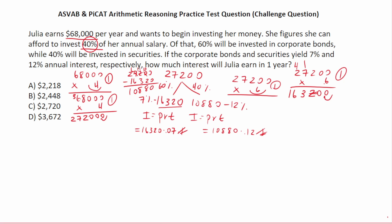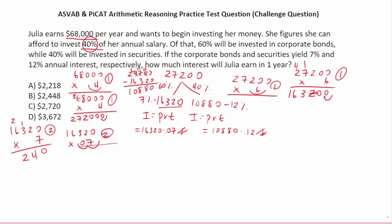We're going to do this multiplication, then this multiplication, and add the two results together. We have 16,320 times 0.07. Move our decimal two places to the right to make this 16,320 times 7, with two decimals to move back in when done. 0 times 7 is 0. 7 times 2 is 14, carry a 1. 7 times 3 is 21, plus 1 is 22, carry a 2. 7 times 6 is 42, plus 2 is 44, carry a 4. 1 times 7 is 7, plus 4 is 11. Bring in our two decimals — so this is $1,142.40.